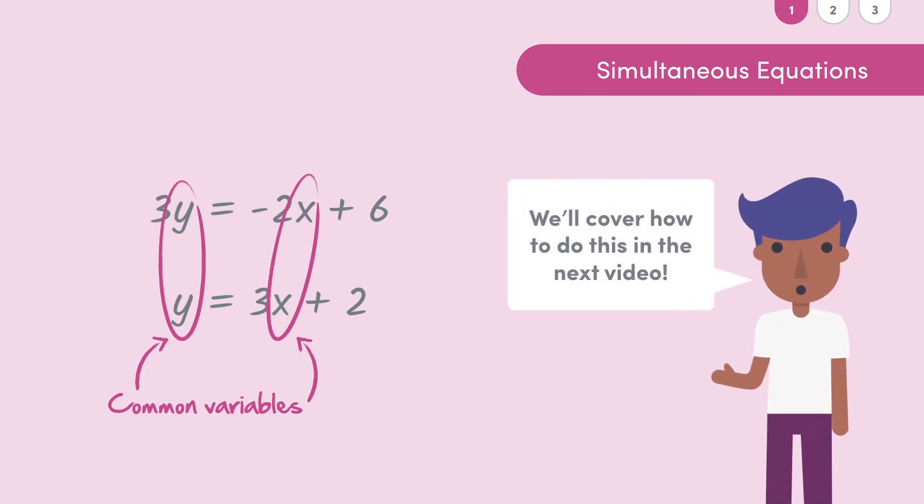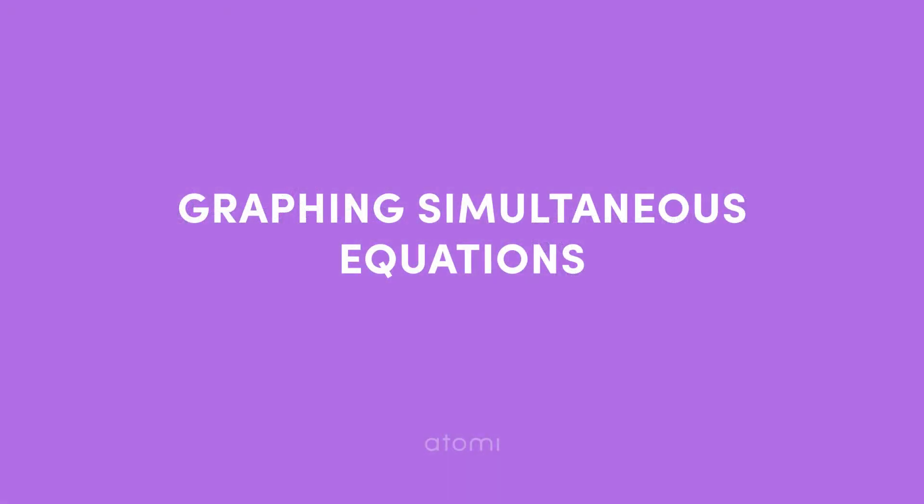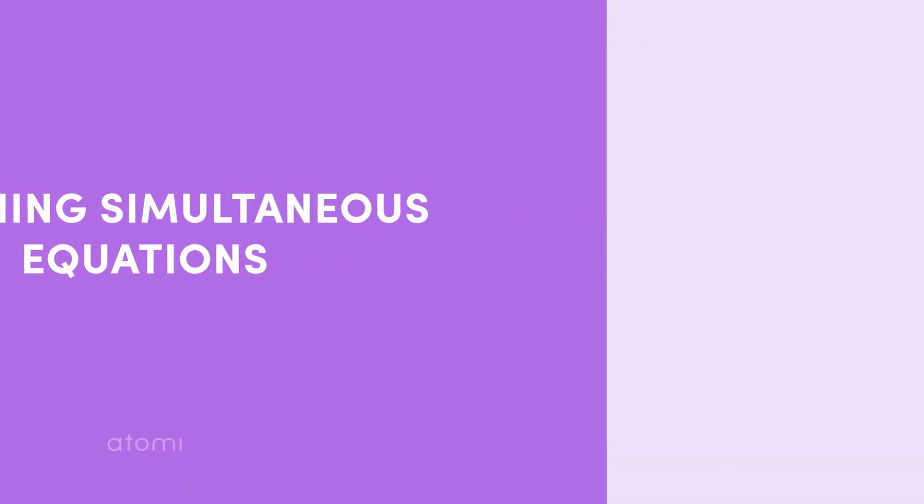Instead, we just care about what these guys look like when we graph them and how we can find that common solution without too much algebra. As is often the case in maths, it's easiest just to see the maths in action. So let's figure out how to do this by looking at a pair of equations such as y equals 5x plus 1 and y equals 2x minus 2. Just a heads up, if you've forgotten how to graph equations like these, check out the year 11 algebra videos on them.